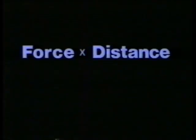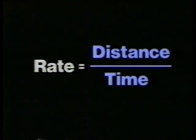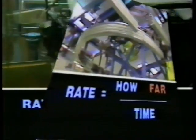For example, in a mechanical system, you start out with force. Force times distance is work, and distance over time is rate. Rate measures how far an object moves over time, how often something happens over time, or how much of something moves over time.